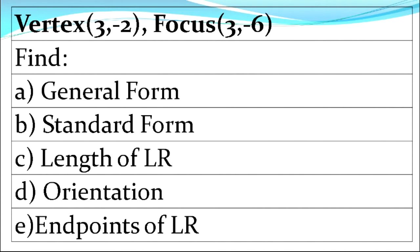This time, when the given is like this, what you do is graph it first, then get the standard form, and then after that the general form — the reverse of last time. What's being asked is the general form, standard form, length of the latus rectum, orientation or opening, and the endpoints of the latus rectum.